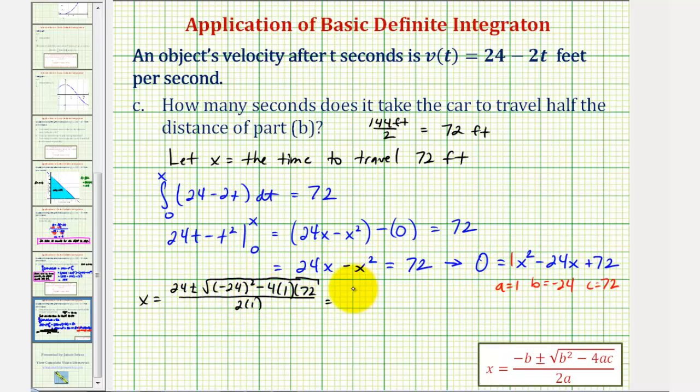So here we'll have 24 ± √[(-24)² - 4(1)(72)] = 288, divided by 2. The square root of 288 simplifies to 12√2.